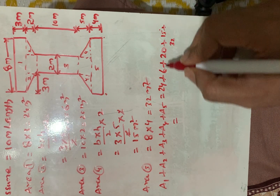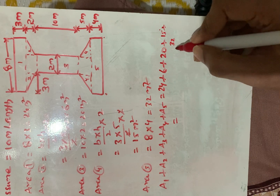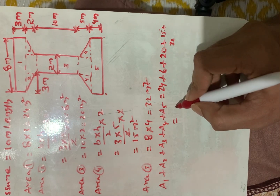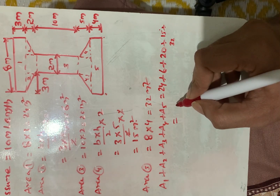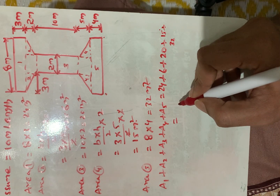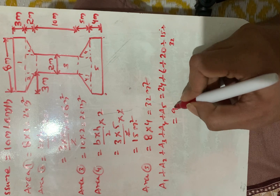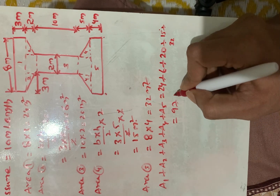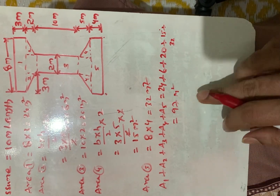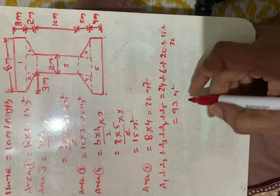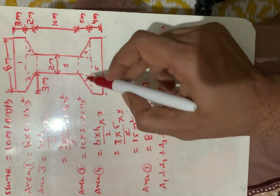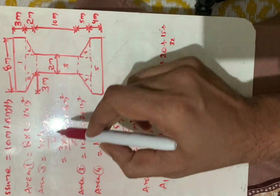So adding all these values: 24 + 6 + 20 = 50, plus 15 = 65, plus 32 = 97 square meters. This is the total cross-sectional area of this composite section.